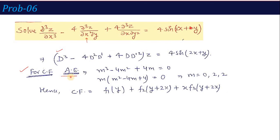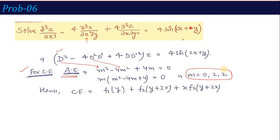For CF, the auxiliary equation is m³ - 4m² + 4m = 0. The roots are m = 0, 2, 2 — two of which are repeated. So CF = f₁(y) + f₂(y+2x) + x·f₃(y+2x), since the root m=2 is repeated, we multiply the second term by x.